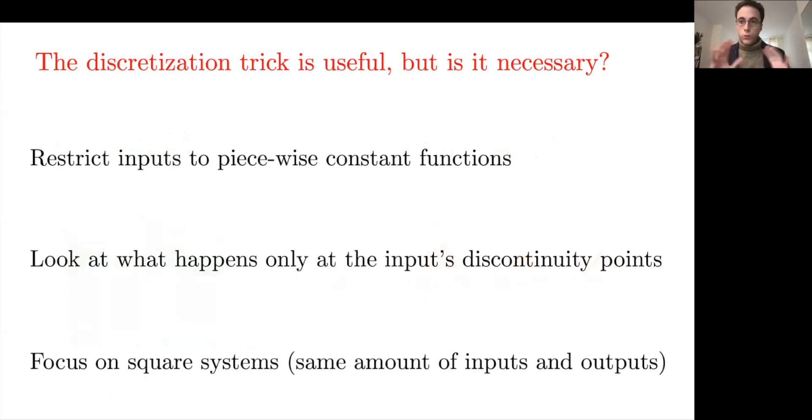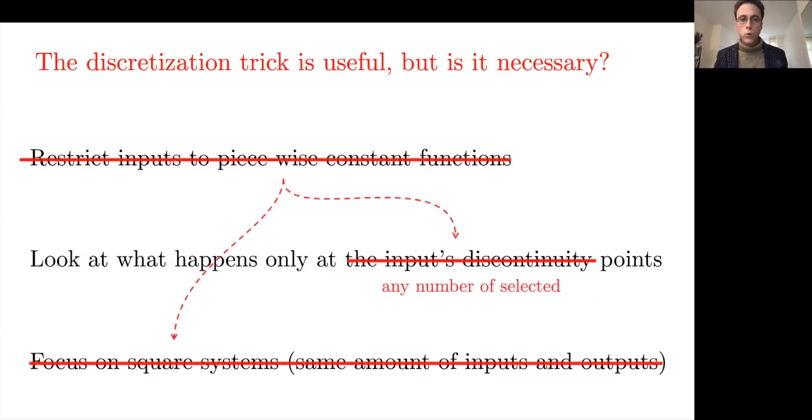So if we put together the kind of restrictions that we have for this general setting of iterative learning control: restricting input to piecewise constant functions, looking at what happens only at the input discontinuity points on the output, and the third one I did not mention is that focus on square systems, so same amount of inputs and outputs. What we propose in this work is to relax the first two ones. As we will see, this will relax our constraints in terms of where to look for the outputs and in terms of having or not a square system.